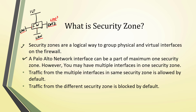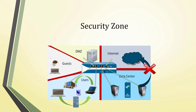Traffic from multiple interfaces in the same security zone is allowed by default. Traffic between the same security zones — like from one LAN interface to another LAN interface — is allowed. Traffic from different security zones is blocked by default, such as LAN to DMZ or DMZ to ISP.